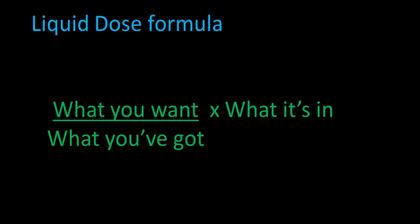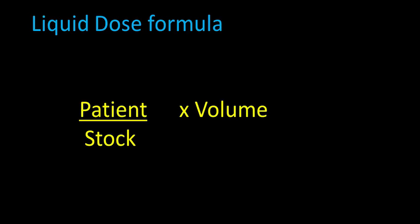I want to go through a few examples calculating the liquid dose. The formula we'll use goes: what you want over what you've got, times what it's in. In other words, turn the question into a fraction times a number. What you want means what you want to give the patient, what you've got means what you have in stock, and what it's in is simply the volume. We must always make sure we have the same units of weight for both the patient and the stock value.